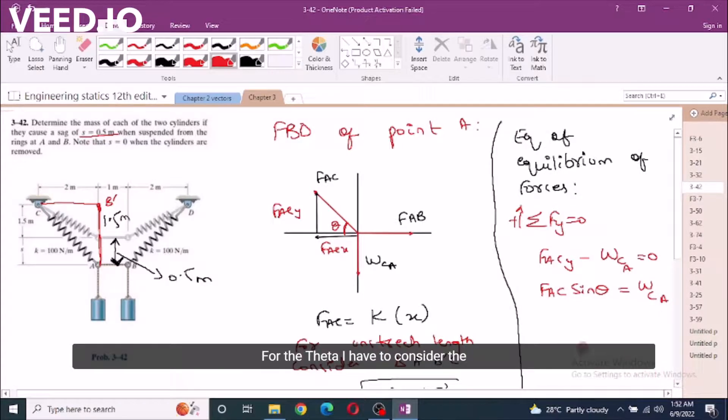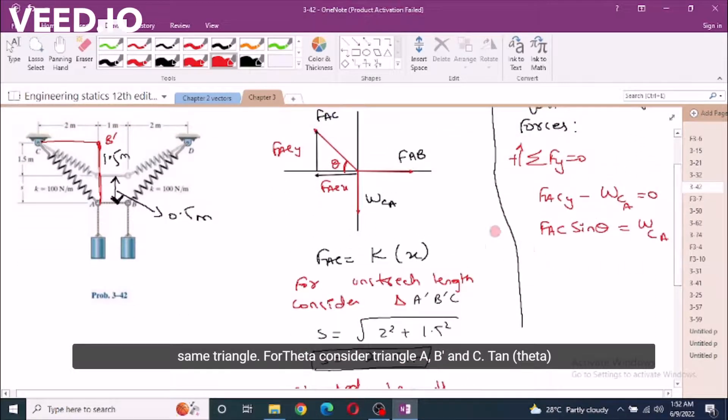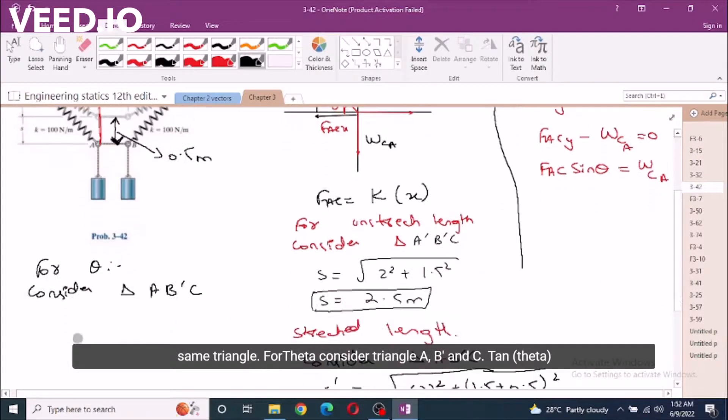For theta, consider triangle CAB'. Using the dimensions 2 and 1.5 plus 0.5 equals 2, theta equals 45 degrees.